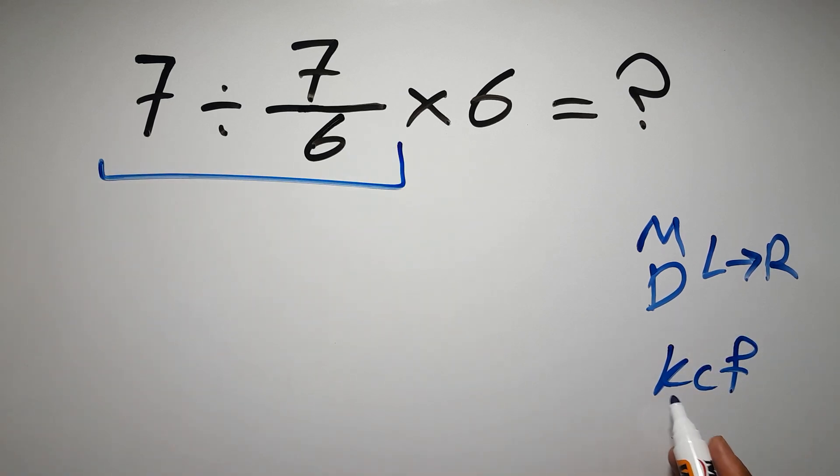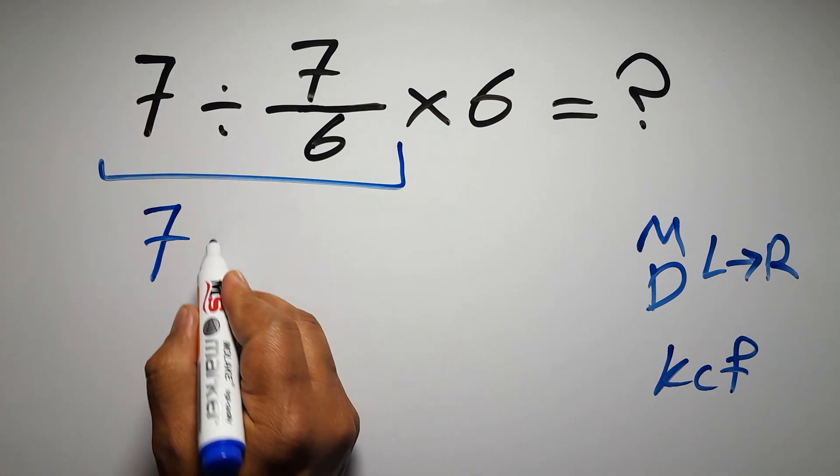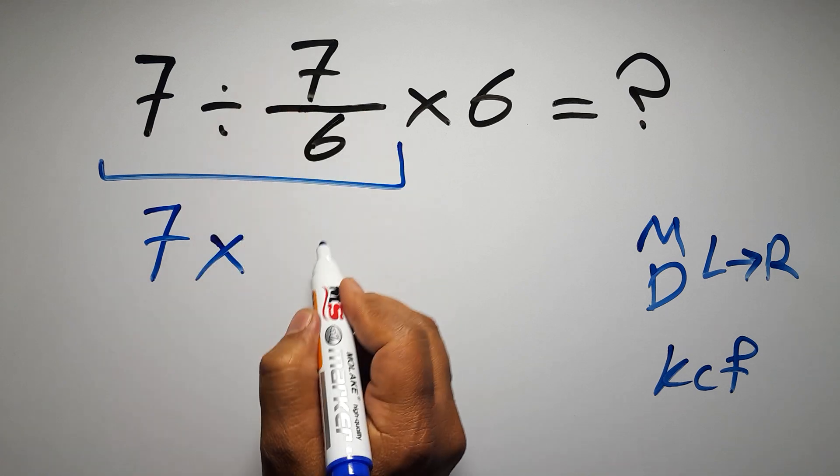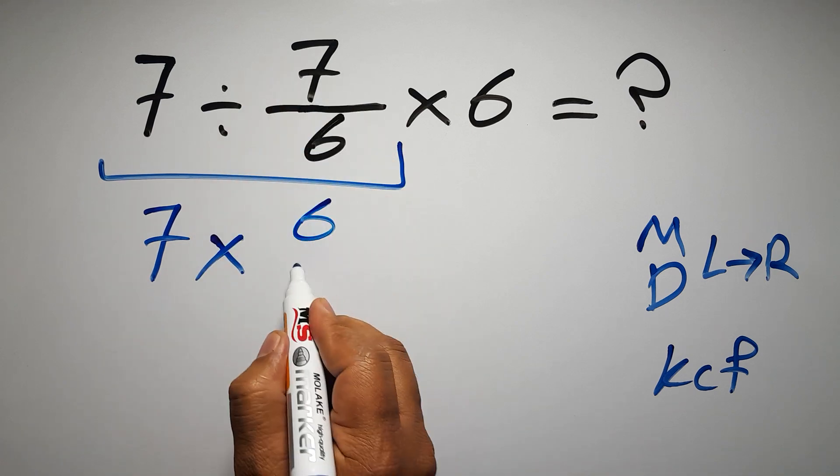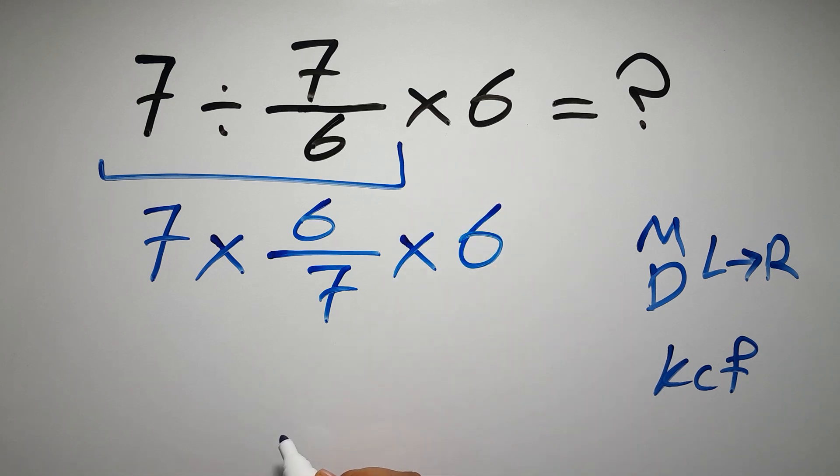K stands for keep, C stands for change, and F stands for flip. We can write: keep the first fraction, change division to multiplication, and flip the second fraction to 6 over 7. And here we have times 6.